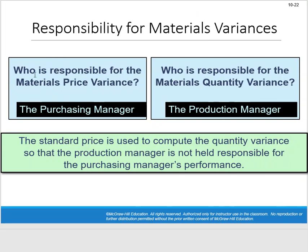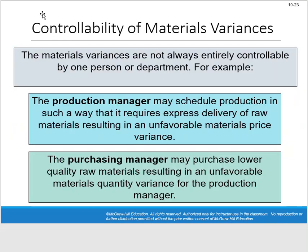Who is responsible? The purchasing manager is responsible for the materials price variance. The production manager is responsible for the materials quantity variance. The standard price is used to compute the quantity variance so the production manager isn't held responsible for the purchasing manager's performance. However, materials variances aren't always entirely controllable by one person. The production manager may schedule production requiring express delivery, causing an unfavorable materials price variance — and could blame purchasing. Purchasing might buy lower quality materials, causing an unfavorable quantity variance — and could blame production.